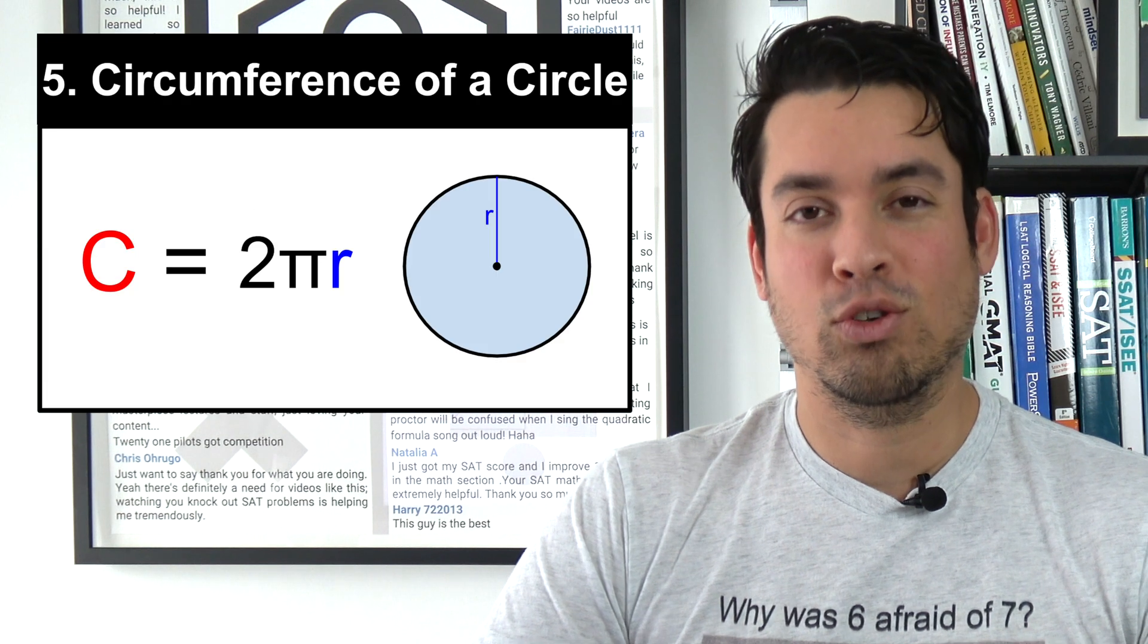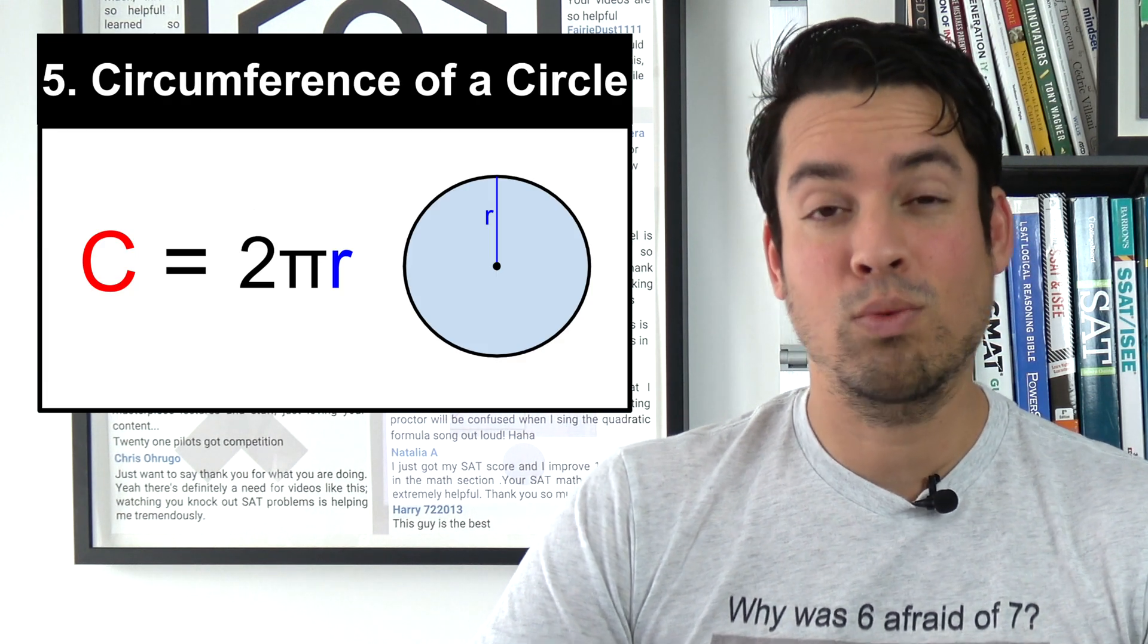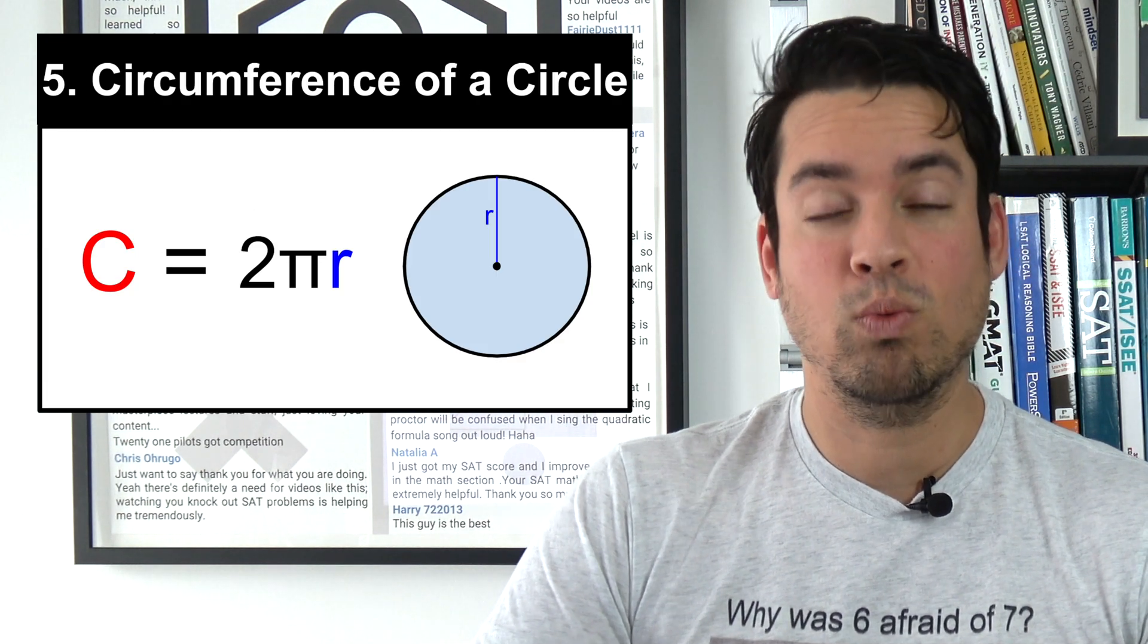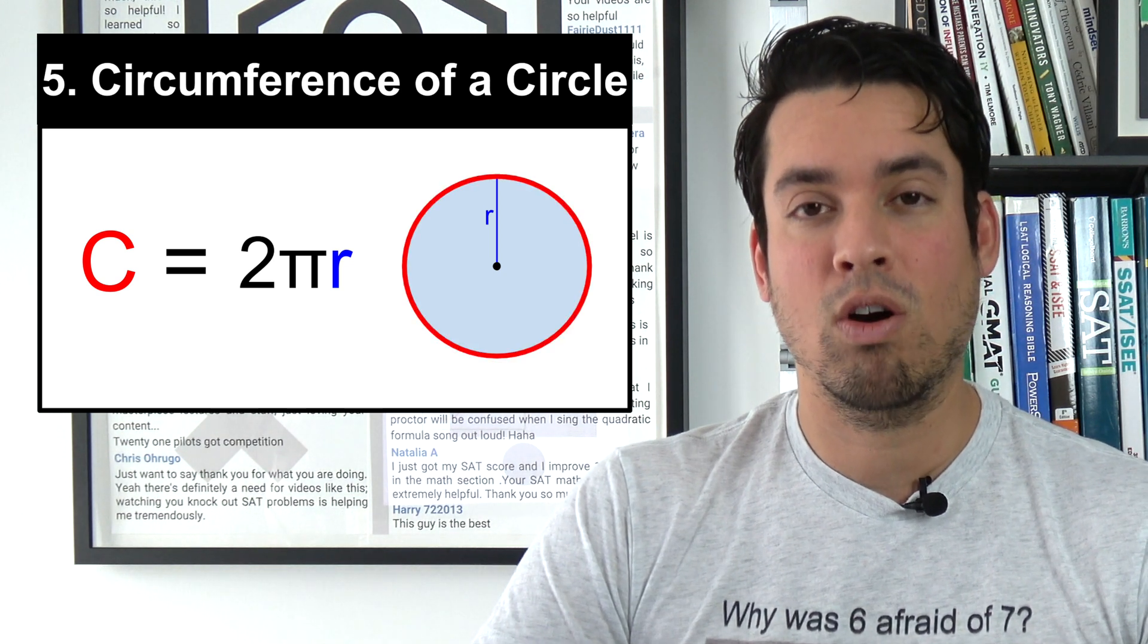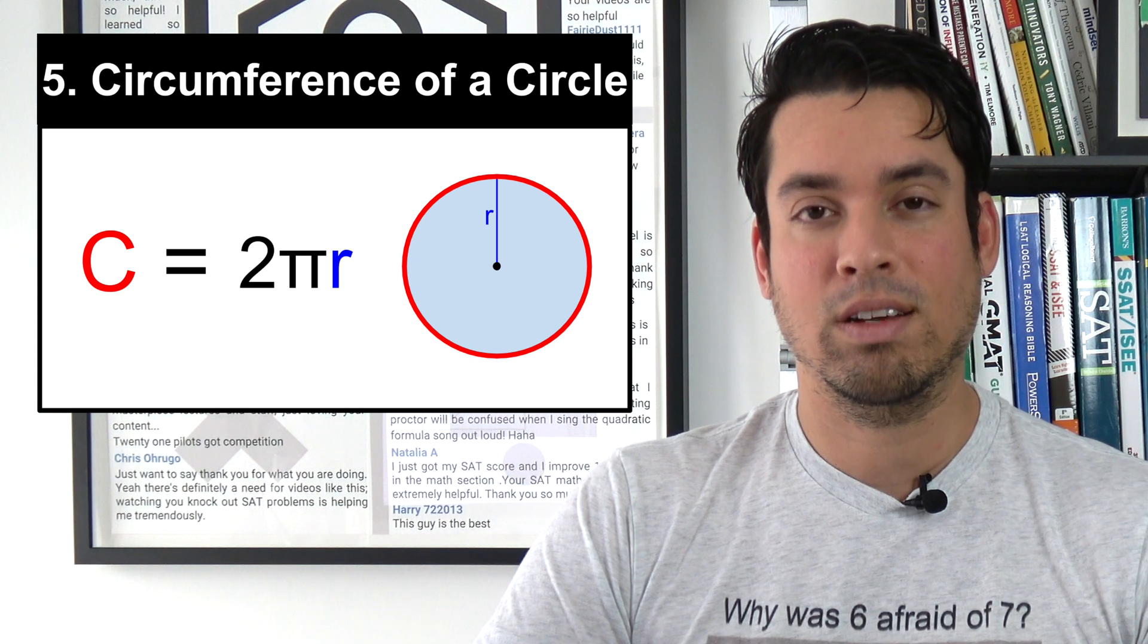Next we have the circumference of a circle. This is a relatively short formula but an important one nonetheless. The circumference is simply 2πr, where r is the radius of a circle.